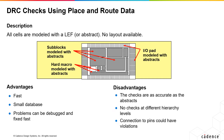However, there are some disadvantages: the checks are inaccurate because they are abstracts and not the GDS2 or layouts of the cells. There aren't checks at the different levels of hierarchy, and the connections to pins could have violations.